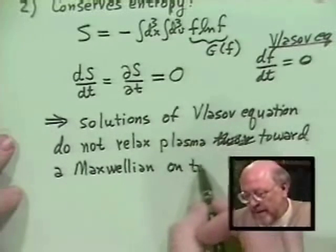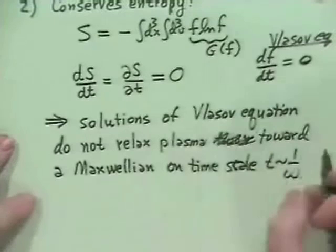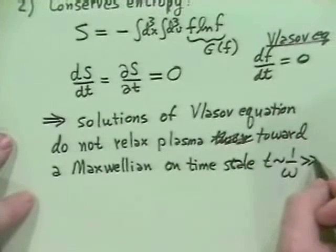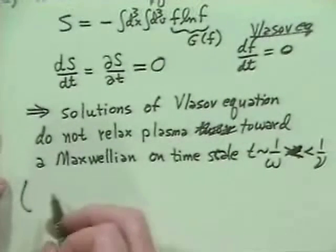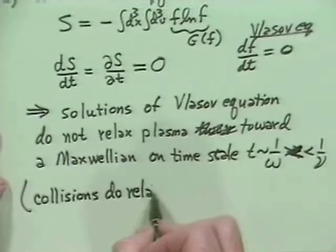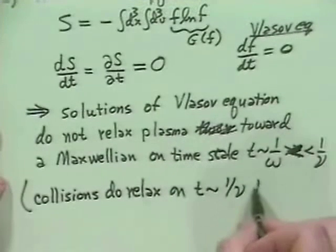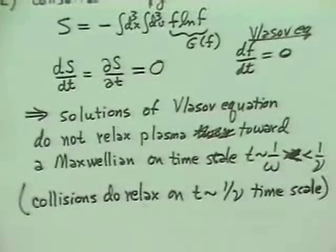Usually as I relax towards a Maxwellian, I increase the entropy of the system. I should say this is on a time scale t of order one over some frequency, which is much shorter than one over ν, because collisions do relax the plasma on a t of order one over ν time scale. But that's a longer time scale than what we're interested in when we're talking about Vlasov plasmas, because we're interested in fast processes where there are no significant collisions in the time scale.